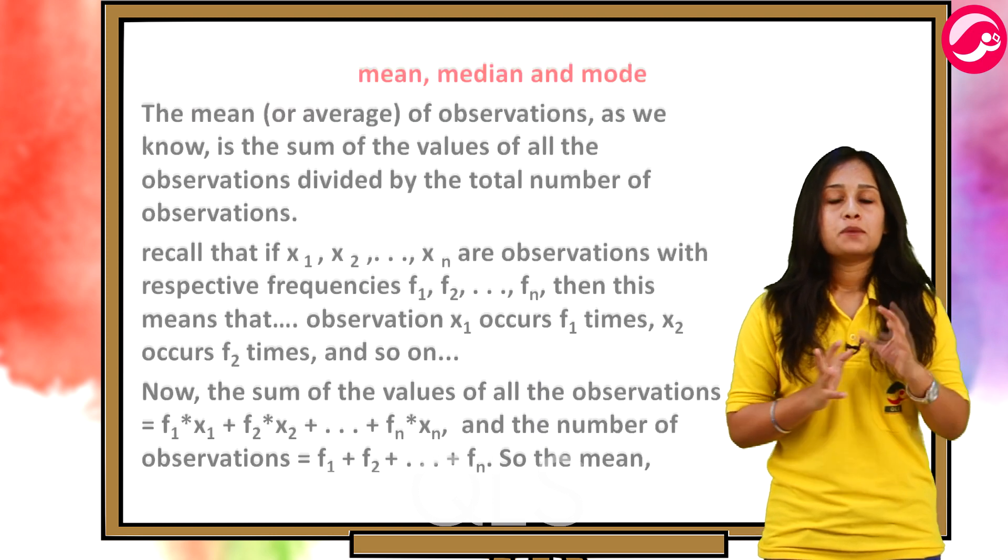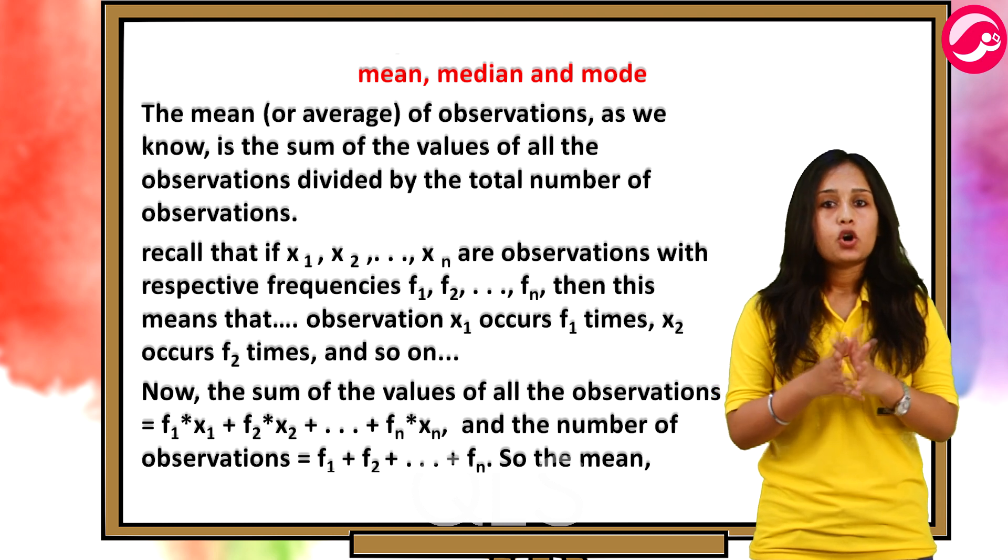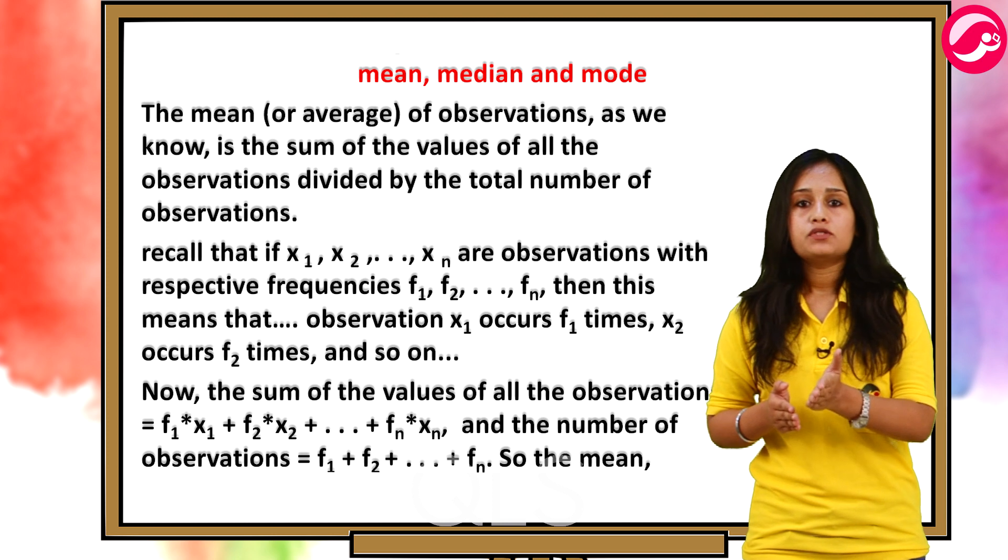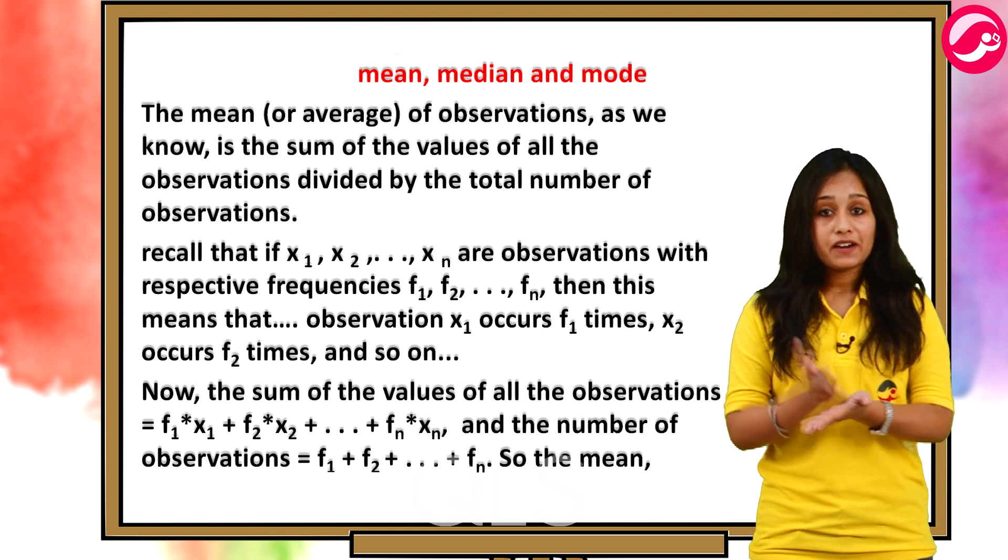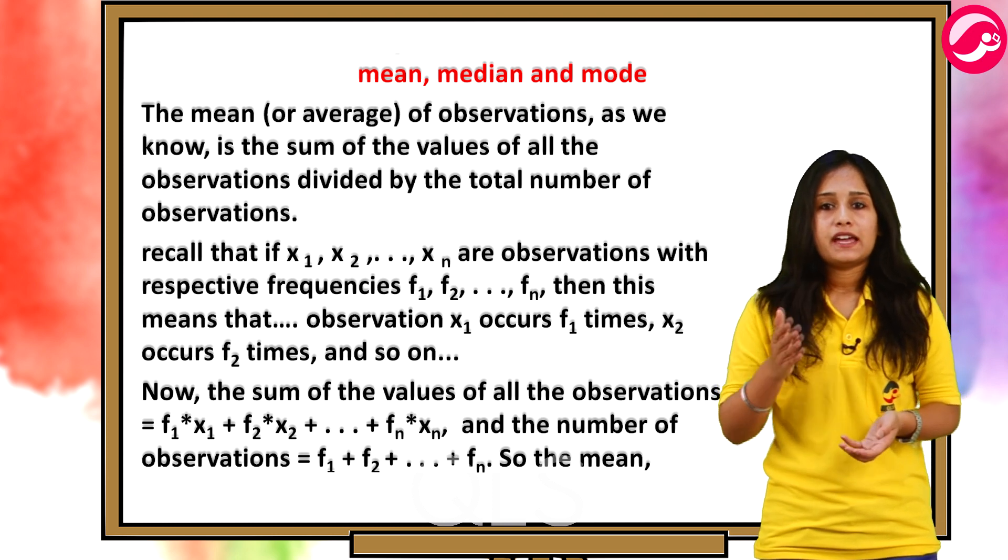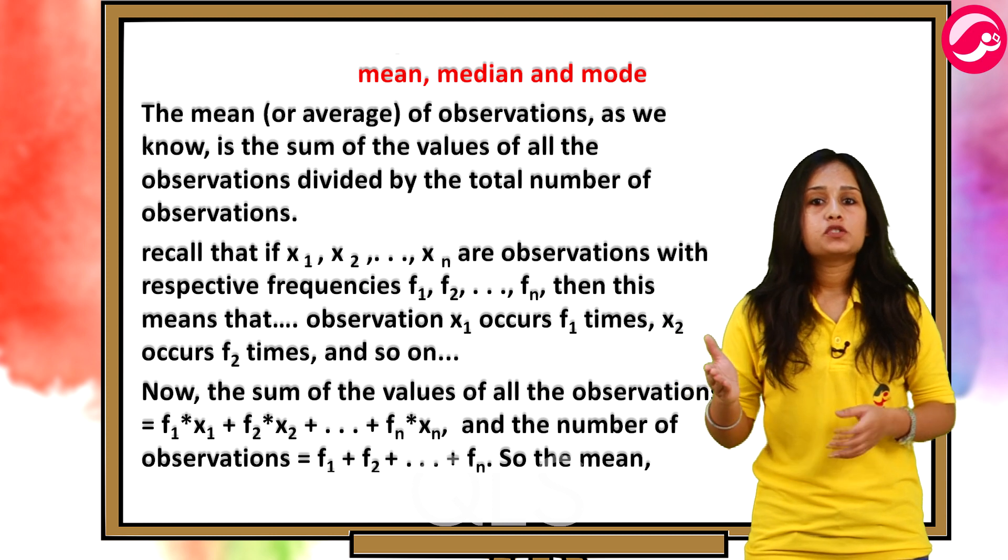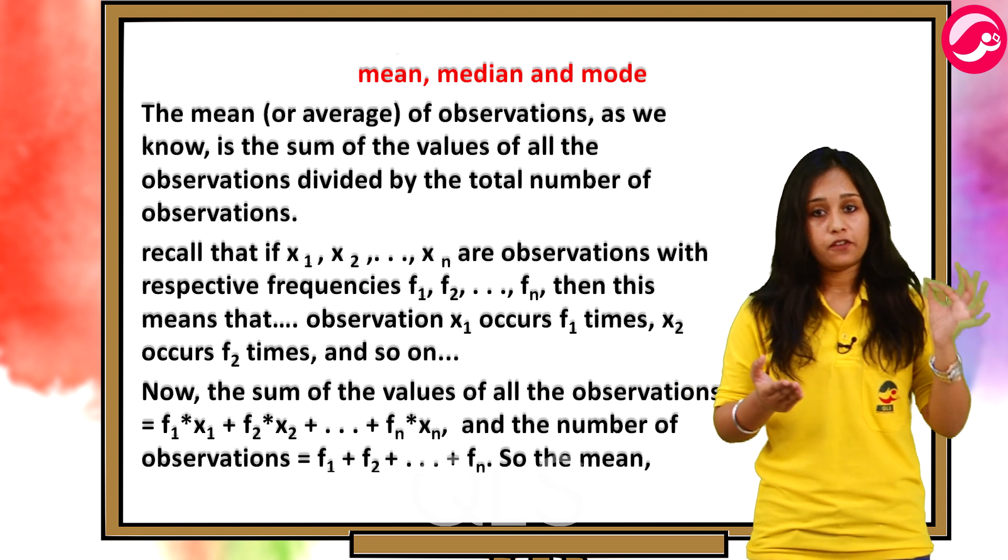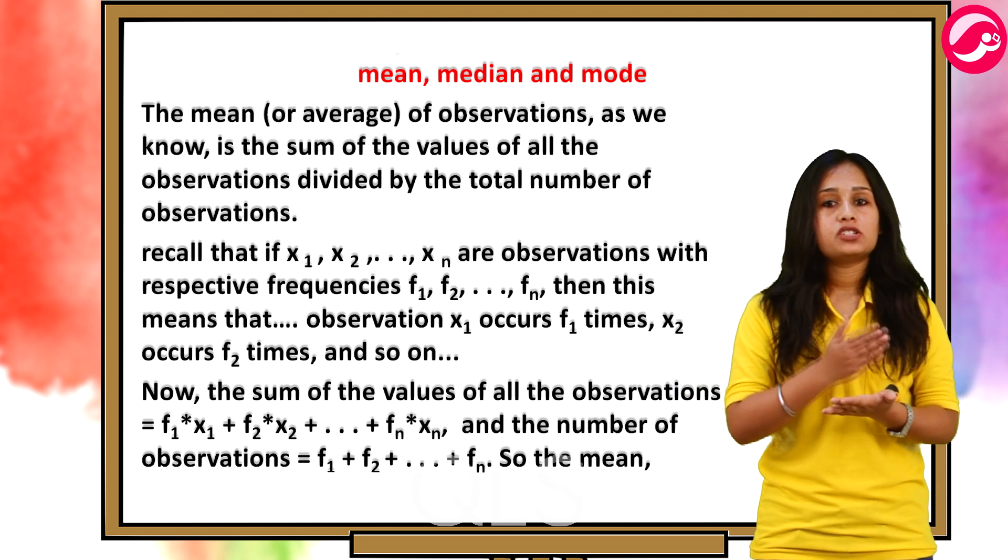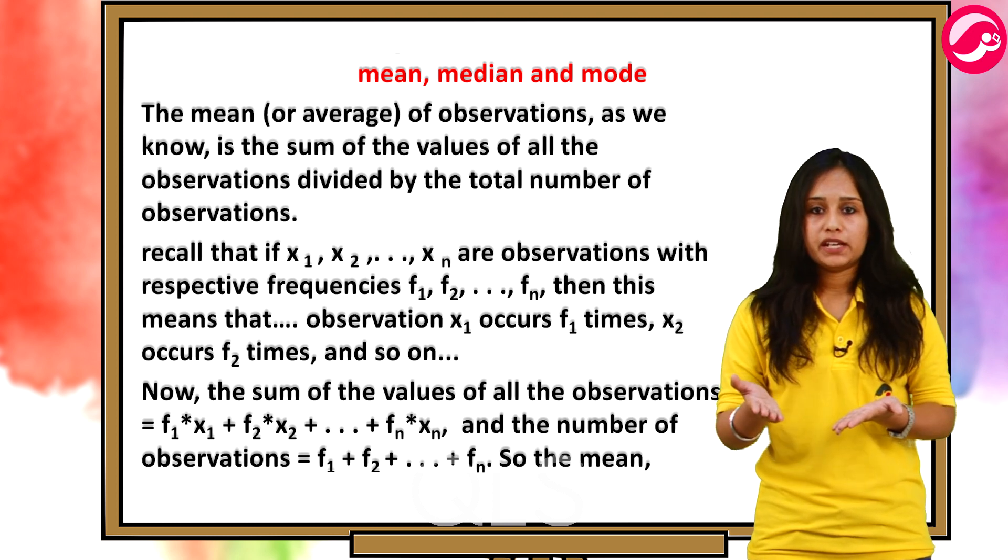Now, we'll be talking about measures of central tendency namely mean, median and mode. The mean or average of observations as we know is the sum of the values of all the observations divided by the total number of observations. Recall that if x1, x2, x3 and so on to xn are observations with respective frequencies f1, f2, f3 and so on to fn, then this means that observation x1 occurs f1 times, x2 occurs f2 times and so on.